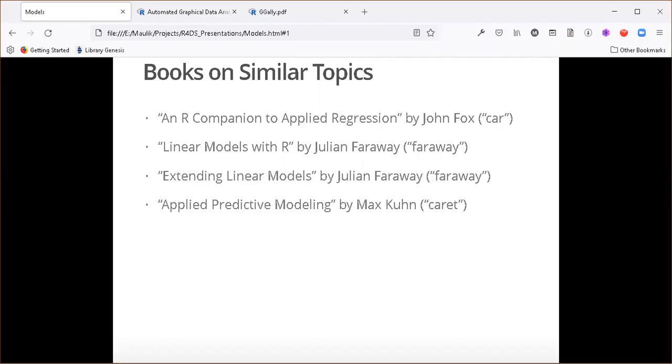Here, this Faraway has also written one more book, Extending Linear Models. And same Faraway package contains the data sets and function required for these two books. And then there is one more interesting book, Applied Predictive Modeling by Max Kuhn. It accompanies the caret package. This book not only deals with linear model, but other machine learning algorithms as well. For example, K-nearest neighbor is also there.